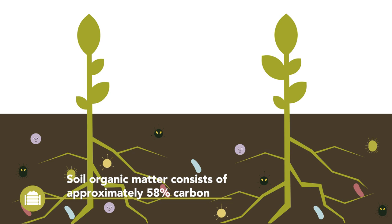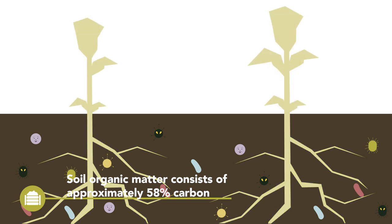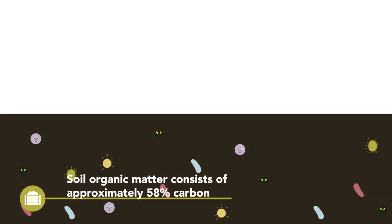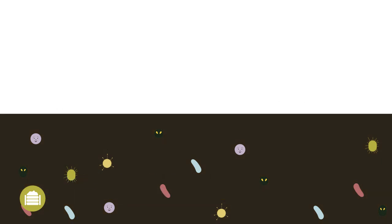Soil organic matter consists mainly of carbon. It is defined by the component in the soil originating from plant and animal residues at different stages of decomposition. In most arable fields in Europe, the content of soil organic matter reaches from 1% to 6%. The cooler the climate and soil, the more soil organic matter can be found. Therefore, in Northern Europe higher levels of soil organic matter are stored than in Southern Europe.